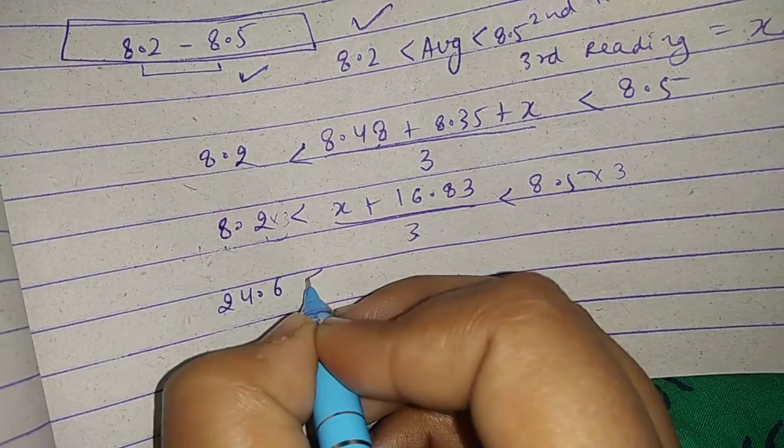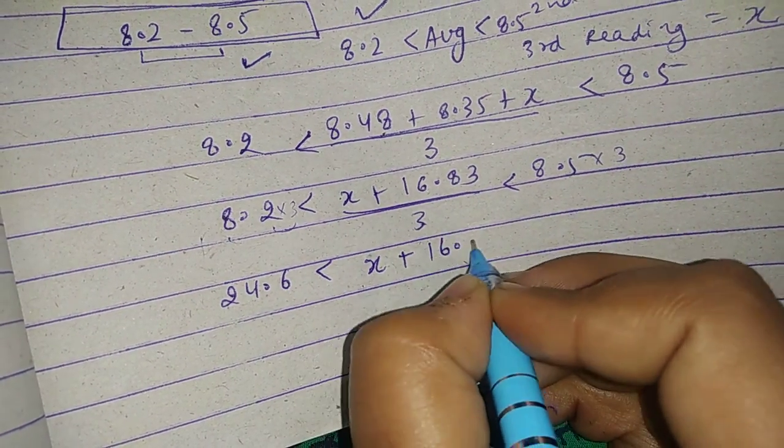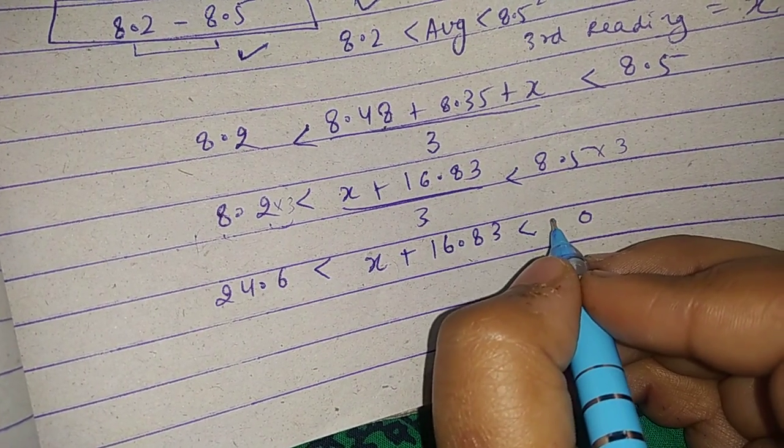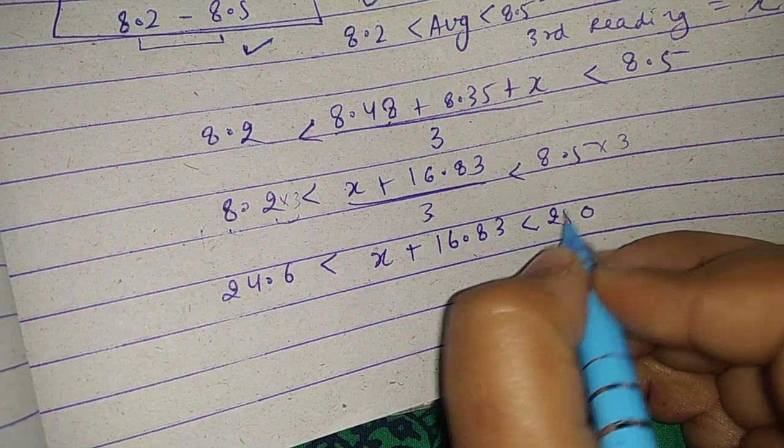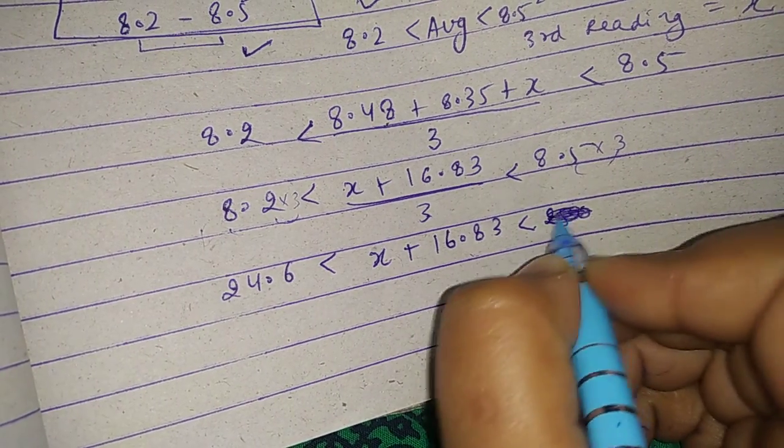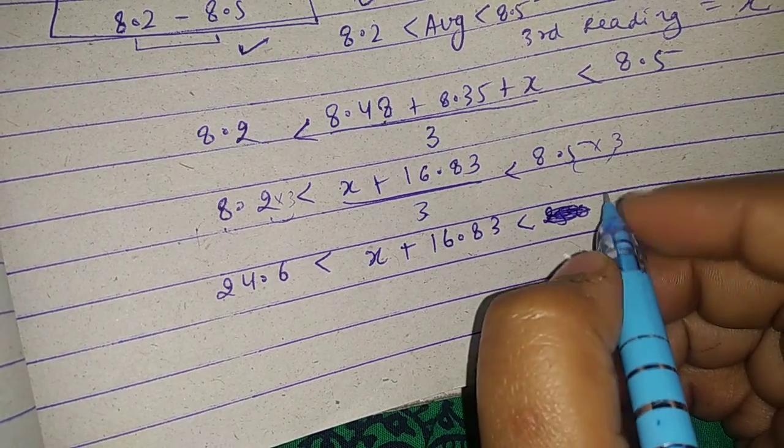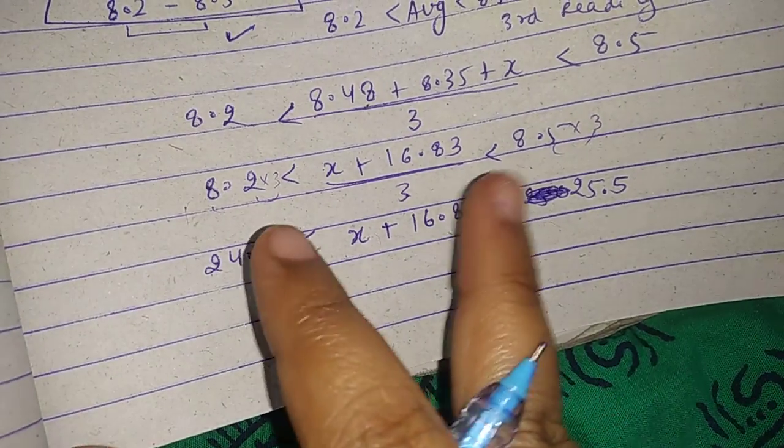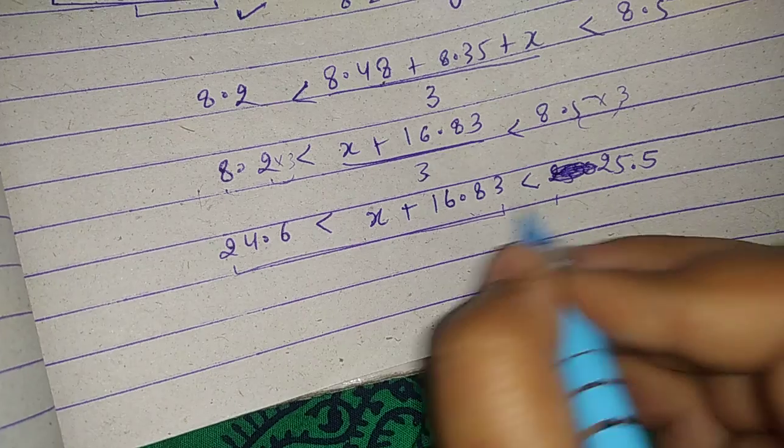24.6 is less than x plus 16.83. 8.5 times 3 is 24... 25. Sorry, 5 times 3 is 15. 8 times 3 is 24, so 25.5. Okay, now we will make both case solve, first solve and then solve.